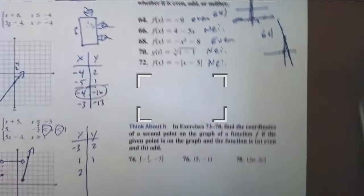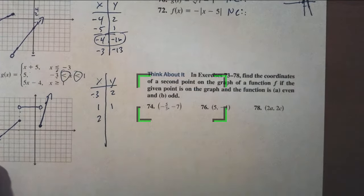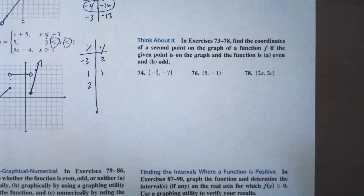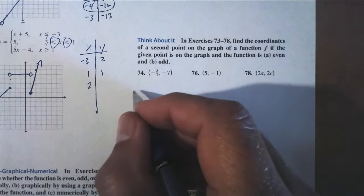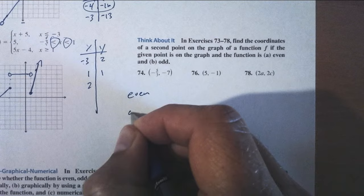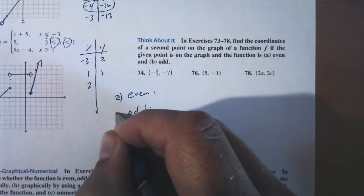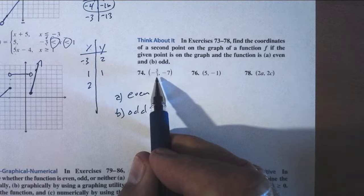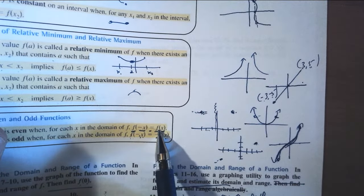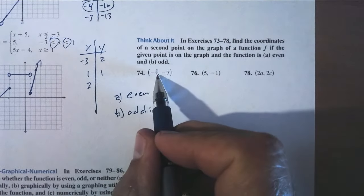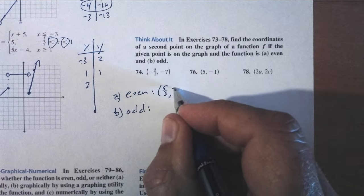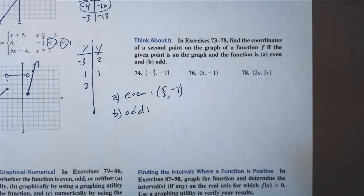Now here's something that will really tell the story. Find the coordinate of a second point on the graph if the given point is on a graph that is (A) even or (B) odd. If it's even, the height to the right is the same as the height to the left. The height at negative 5/3 is negative 7, so the height at positive 5/3 must also be negative 7.